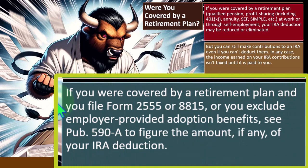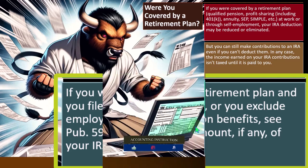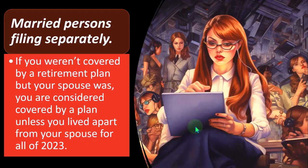If you were covered by a retirement plan and you file Form 2555 — for foreign earned income — or Form 8815, or you exclude employer-provided adoption benefits, see Publication 590-A to figure the amount, if any, of your IRA deduction.